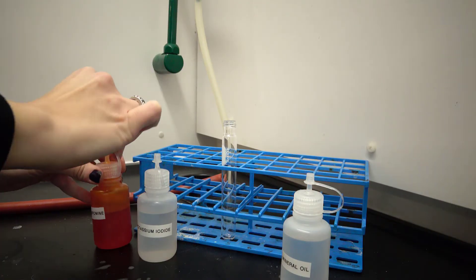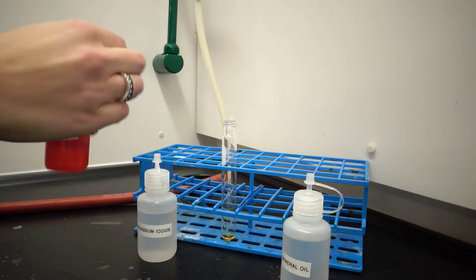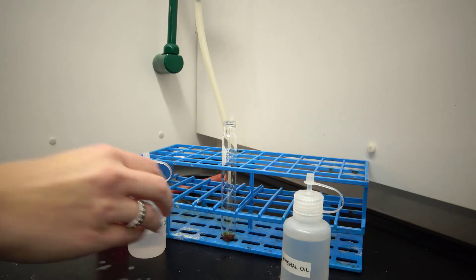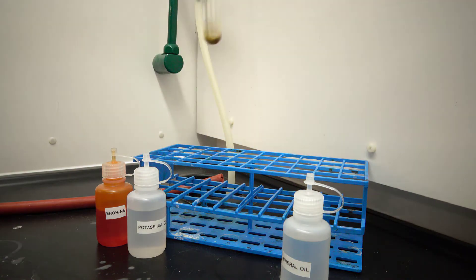In the hood, place five to ten drops of each in a test tube. Now cap the test tube and shake it up to allow the halogens to react. This is when the higher electron affinity halogen is taking the electron.